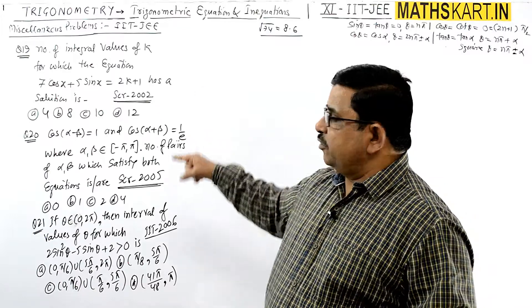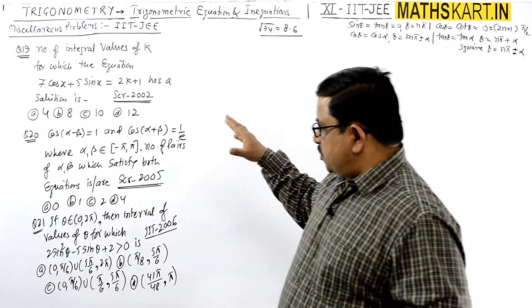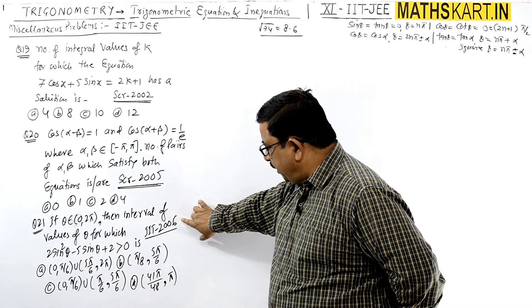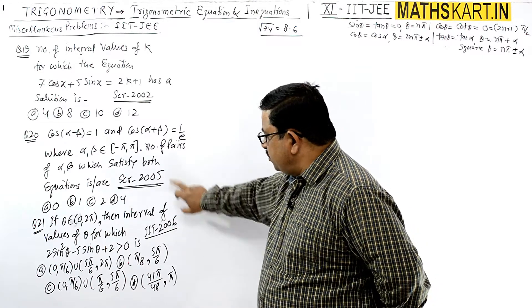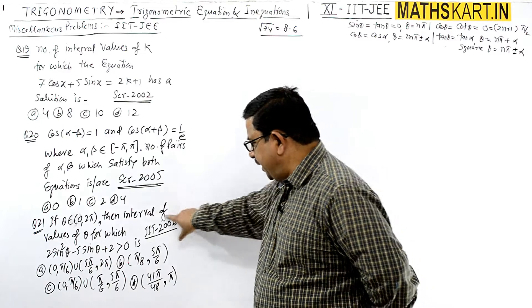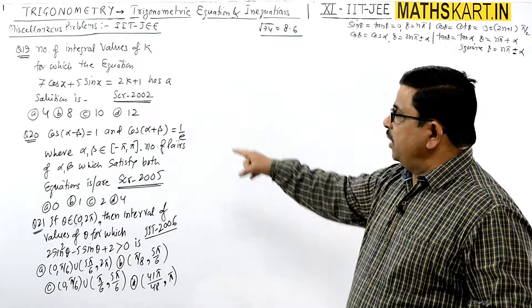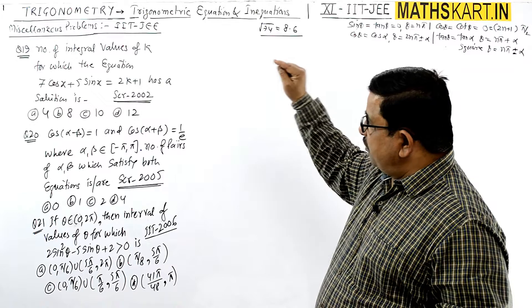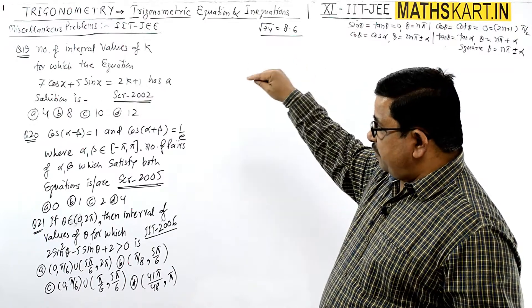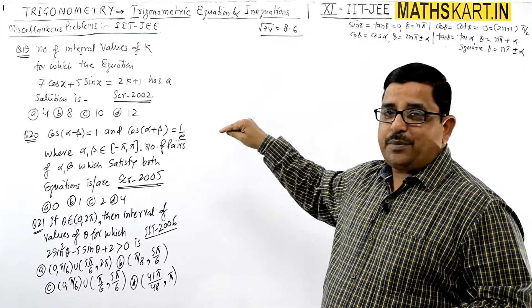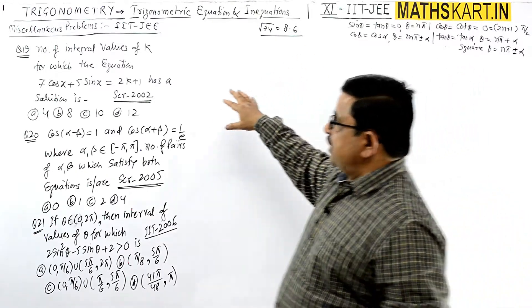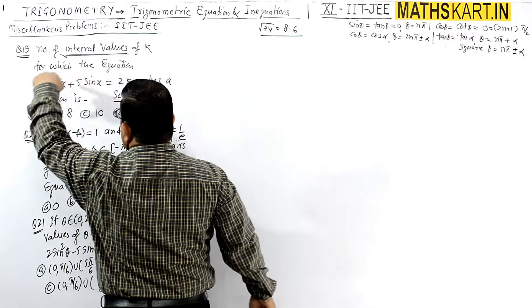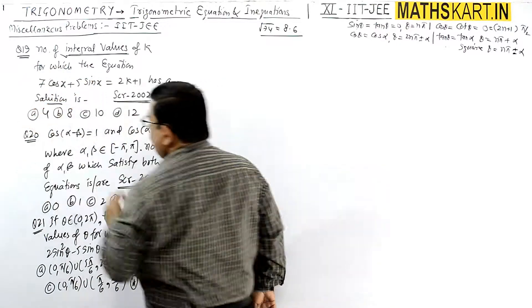From question 19 onwards we are starting with the IIT JEE questions - screening 2002, screening 2005, and this is for IIT 2006, which can be screening or mains also. Number of integral values of k for which this equation has a solution - this is the particular type of question we have already done. We need to find the integral values of k for which this equation has a solution.